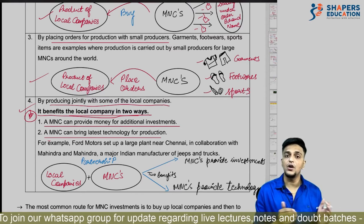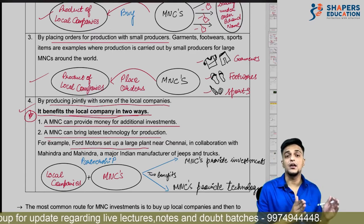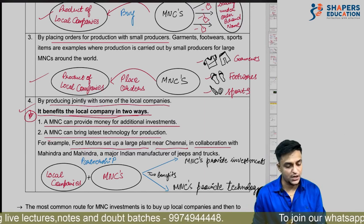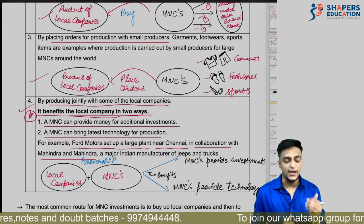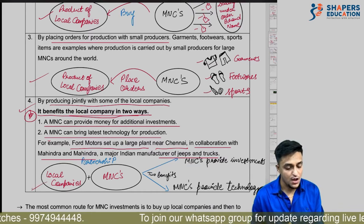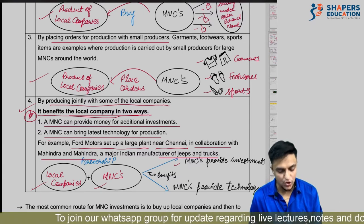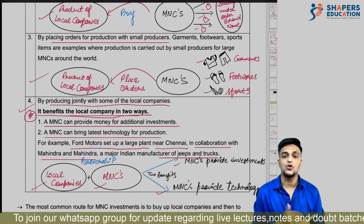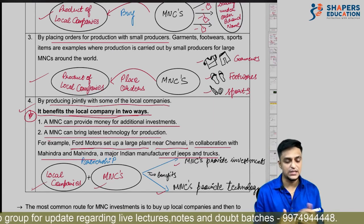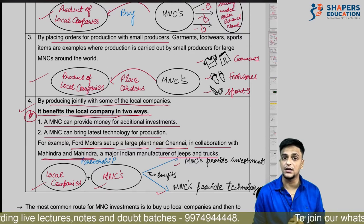Example: Ford Motors set up a large plant in Chennai and collaborated with Mahindra and Mahindra, an Indian company that manufactures jeeps and trucks. So the local company gets two benefits from partnership with MNC: the MNC provides investment money, and the MNC provides latest technology. Ford Motors and Mahindra and Mahindra — remember these examples.